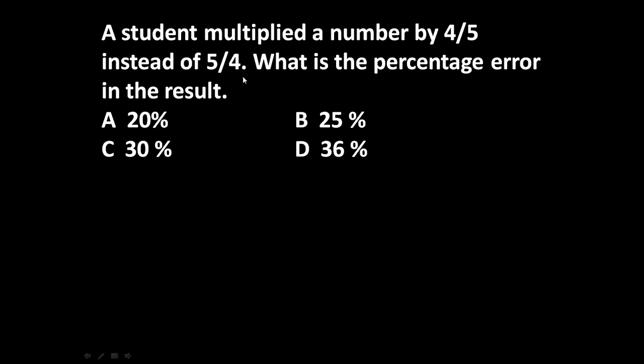He must multiply a number by 5/4, but he multiplied the number by 4/5 instead of 5/4. So what is the percentage of error? To answer this question, let us assume the number he wants to multiply is equal to 100.